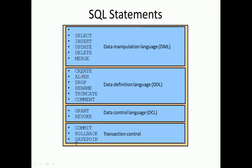DDL commands include CREATE, ALTER, DROP, RENAME, TRUNCATE, and COMMIT. Data Control Language (DCL) commands — GRANT and REVOKE — are used to control user access to database objects. Transaction Control commands include COMMIT, ROLLBACK, and SAVEPOINT, and after each DML operation we are required to use COMMIT or ROLLBACK to complete the transaction. We will study all of these in detail in later lessons.